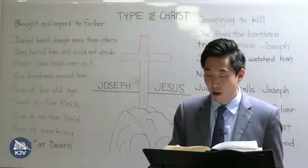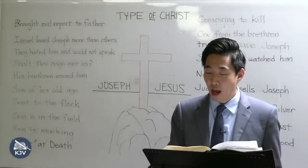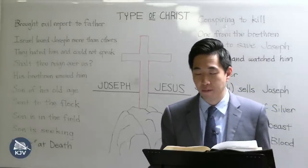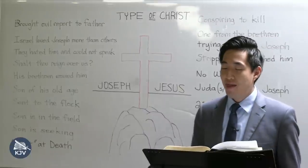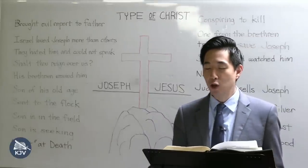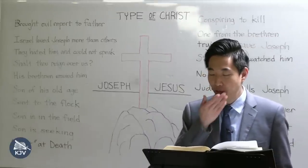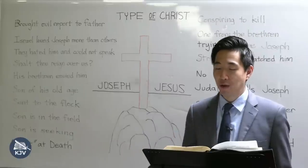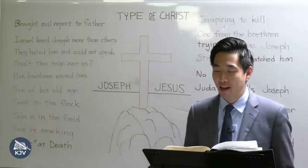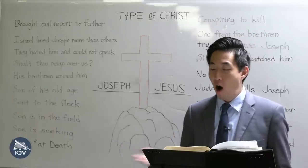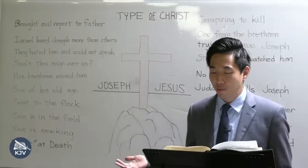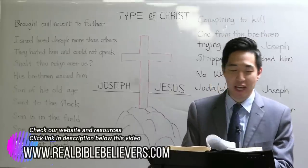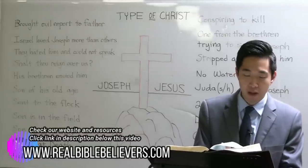Verse 4: 'And when his brethren saw that their father loved him more than all his brethren, they hated him and could not speak peaceably unto him.' When Joseph's brothers saw that their own dad loved Joseph more than all of them, they hated Joseph and couldn't speak in peace with him.